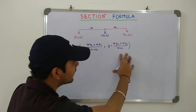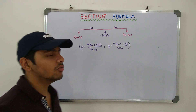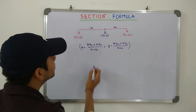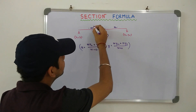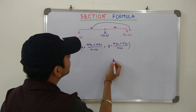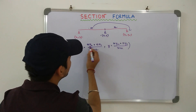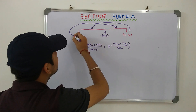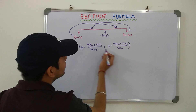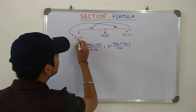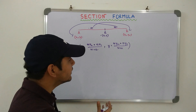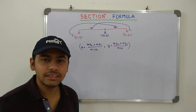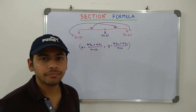You have to learn this particular formula by heart because it is very important. There is also an easy way to remember it: the ratio m is multiplied by the coordinates opposite to it — mx2 and my2. The ratio n is multiplied by the coordinates opposite to it — nx1 and ny1. And in the denominator, it is always the sum of the two ratios m plus n. This is the easy way to remember Section Formula. Now, we will move on to the next thing which is Midpoint Formula.